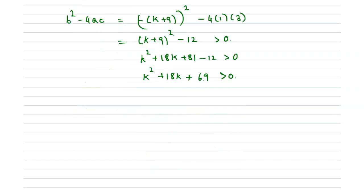Now this quadratic equation can be solved by a formula method. So we can have k equals minus 18 plus or minus square root of 18 squared minus 4 times 69, divided by 2, because the formula is minus b plus or minus square root of b squared minus 4ac divided by 2a.